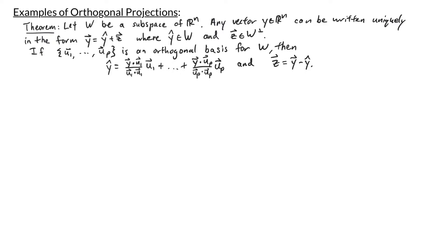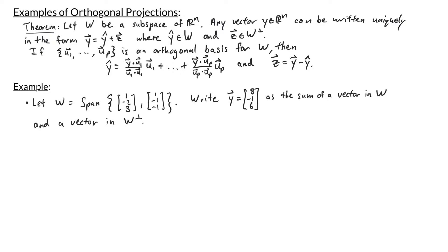So let's consider the following example. Let w be the span of the vectors (1, -2, 3) and (1, -1, -1). We're asked to write y, the vector (8, -1, 6), as the sum of a vector in w and a vector in w-perp. Let me call the vector (1, -2, 3) u1, and the vector (1, -1, -1) u2.